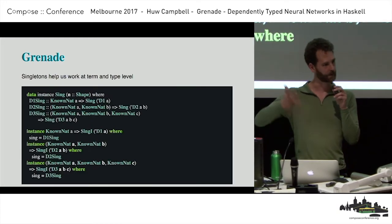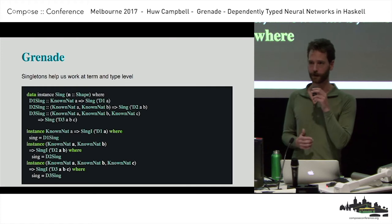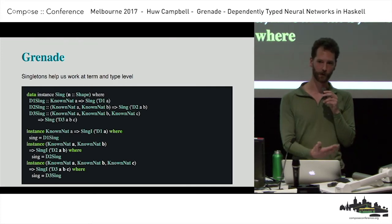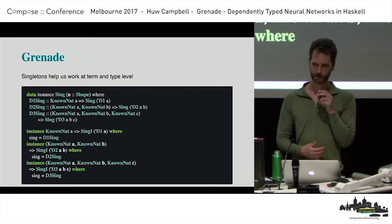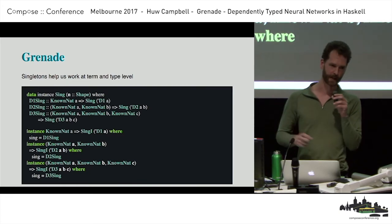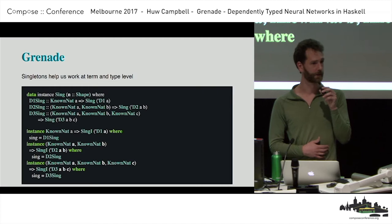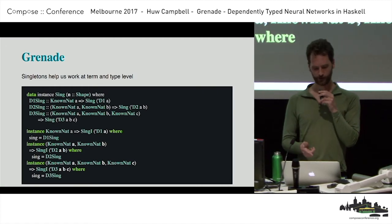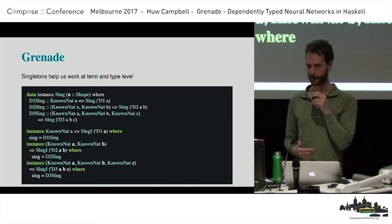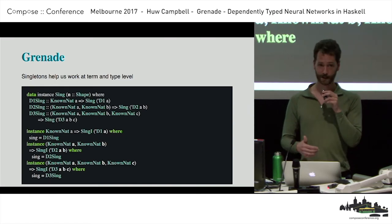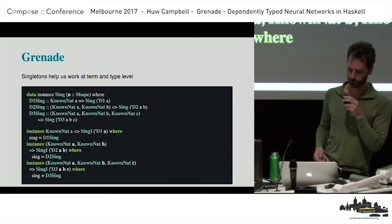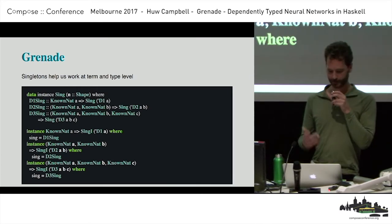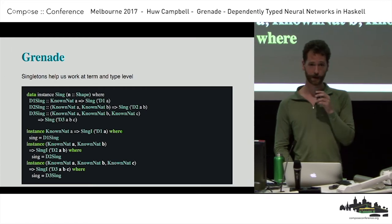Singletons help us work up and down the type level. In Haskell there's type erasure — types aren't available at runtime — but you can use singleton types to quasi-pattern-match on your types. I've never seen anyone write singletons by hand before; normally people use Template Haskell. These ones couldn't be done with Template Haskell because they're a bit complex, but there's a picture of what writing them by hand actually looks like.